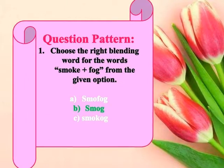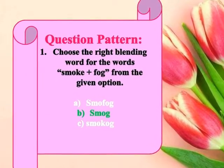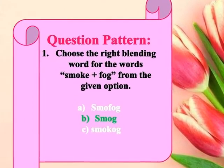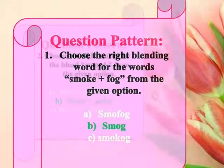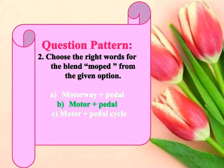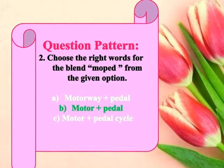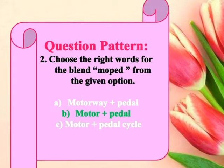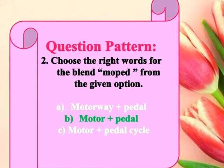The question can be asked in two ways. First, we have to choose the right blending word from two given words — for example, choose the right blending word for 'smoke' plus 'fog'; the right answer is 'smog'. The other pattern is where the blending word is given and we have to choose the two source words — for example, choose the right words for the blend 'moped'; the right answer is 'motor' plus 'pedal'.